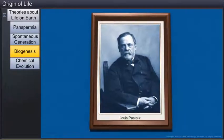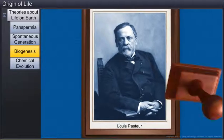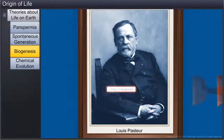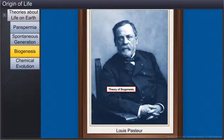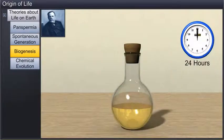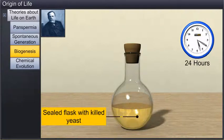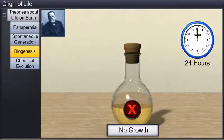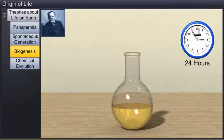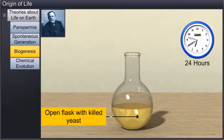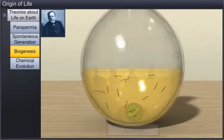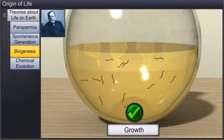Later on, Louis Pasteur, with his experiments, proved the theory of biogenesis and forever silenced the advocates of spontaneous generation. In his experiment, he used pre-sterilized sealed flasks with killed yeast. These flasks did not show any signs of life. On the contrary, in another flask, he exposed killed yeast to air. Surprisingly, living organisms were found in this flask.